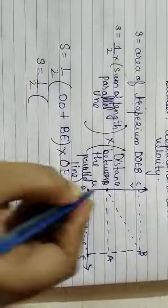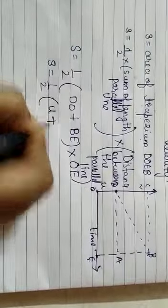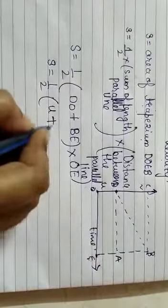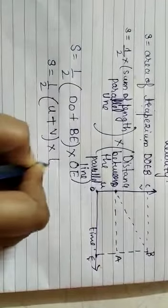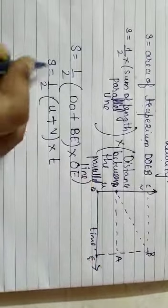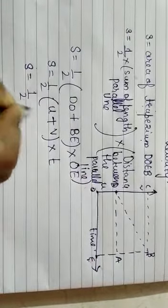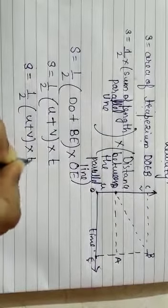So S is equal to half. What are their values? DO is u, which is initial velocity, plus BE is v, final velocity, into t. T is the distance here. This much is the distance. Therefore S is equal to half u plus v into t.